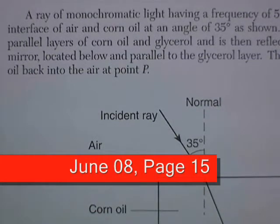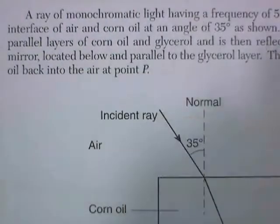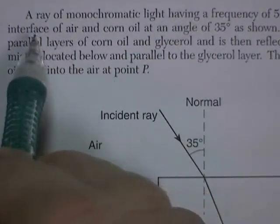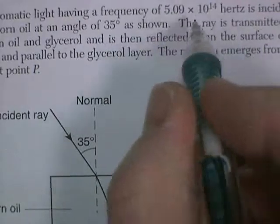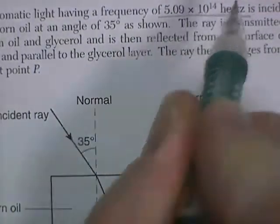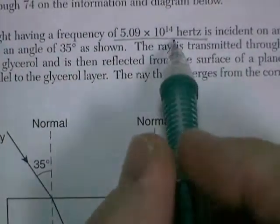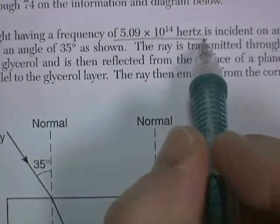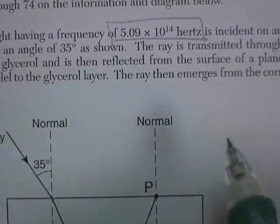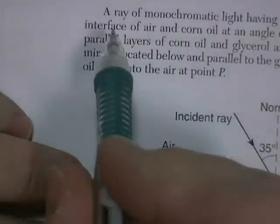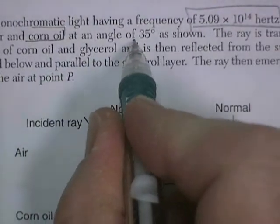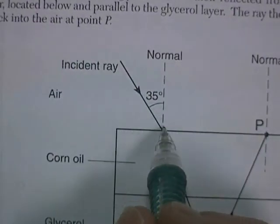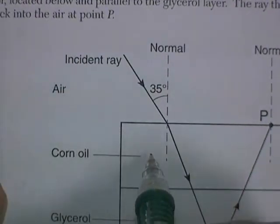June Audit, page 15, questions 72 through 74 pertain to this information here. A ray of monochromatic light having a frequency of 5.09 times 10 to the 14 hertz - that shouldn't scare you, that's there for one particular reason - is incident. It hits the interface of air and corn oil at an angle of 35 degrees as shown in the picture. So that's air, that's corn oil.